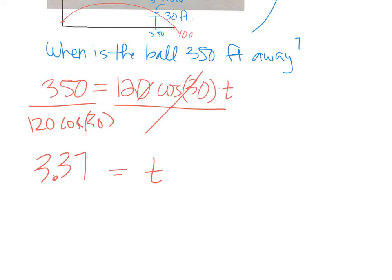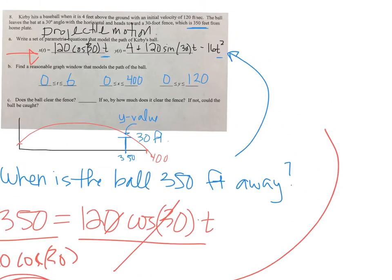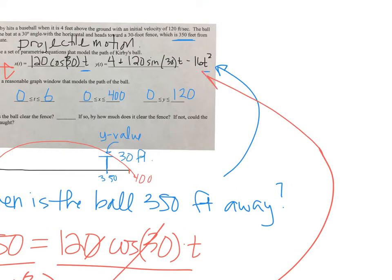After about 3.4 seconds, the ball is 350 feet away. So I'm going to take that time and plug it into this equation to figure out what is the height of the ball at that exact same time.